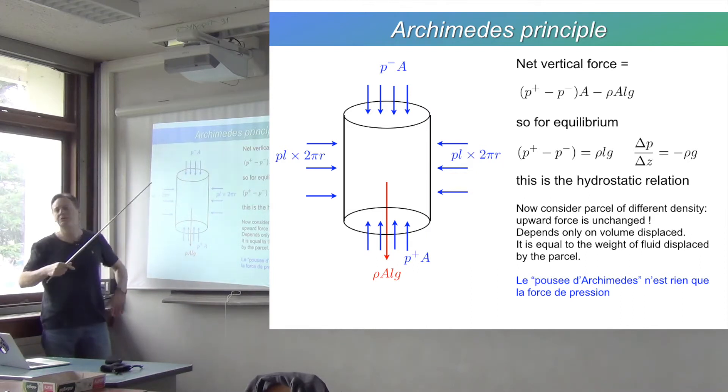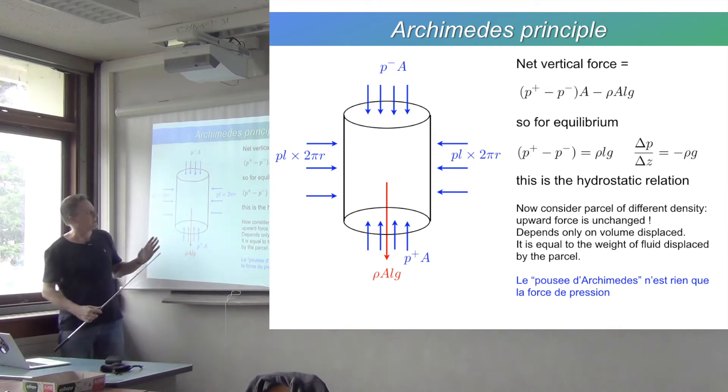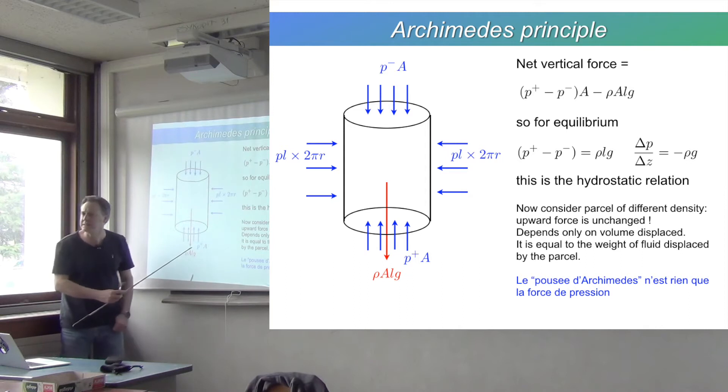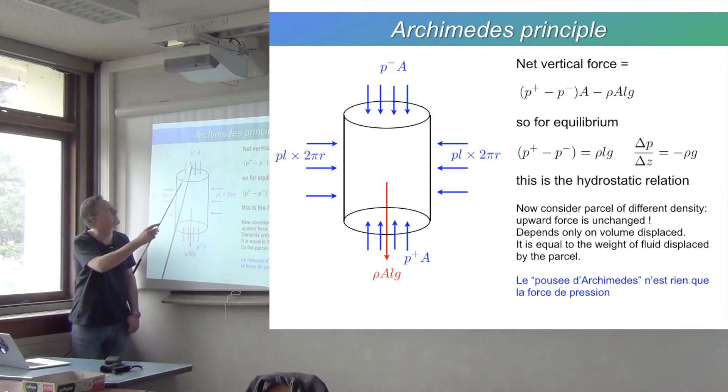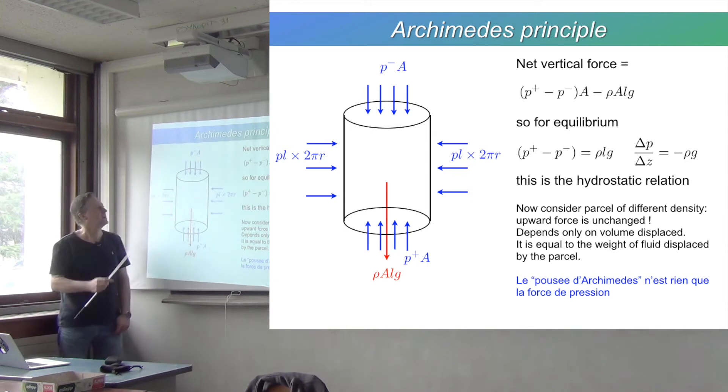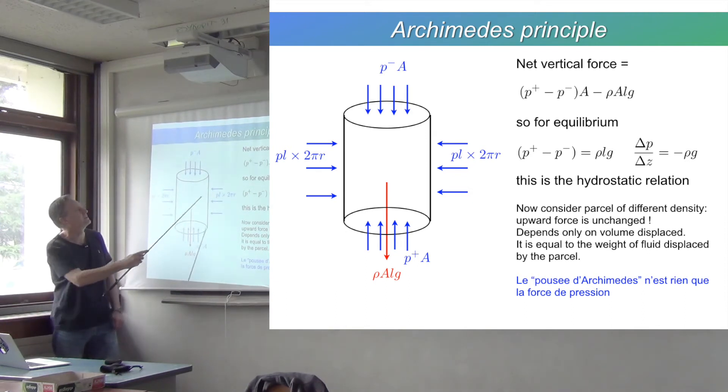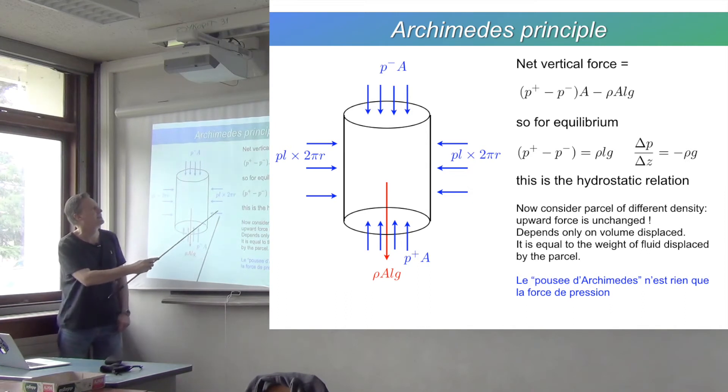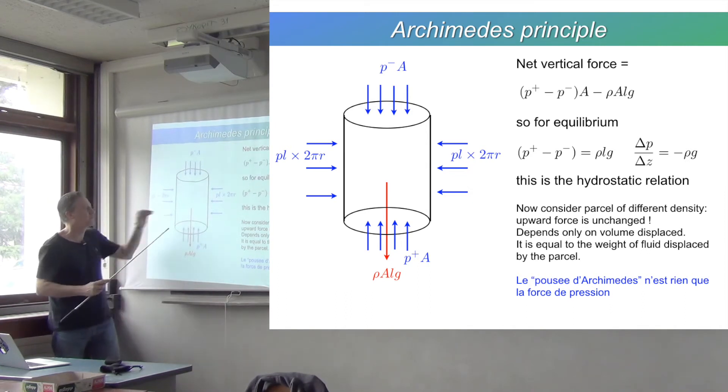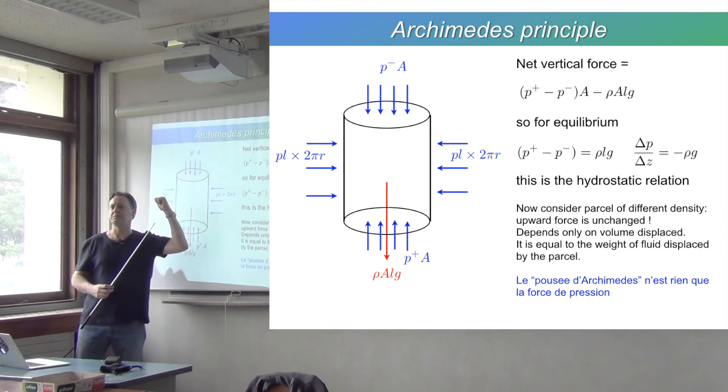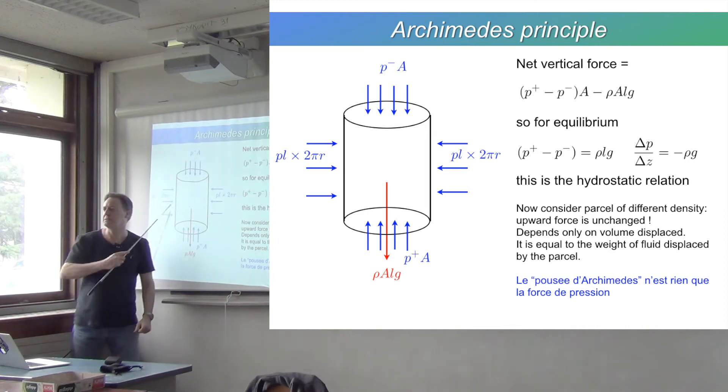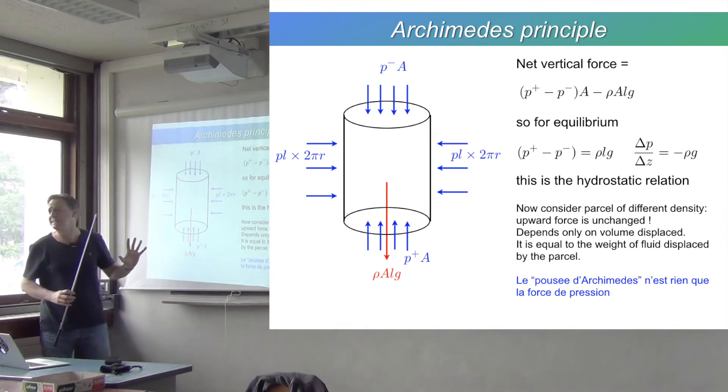That is pushing downwards because pressure always pushes in on things. At the bottom it's pushing upwards. There's a slight imbalance between the top and the bottom because the pressure is greater at the bottom. On the sides the pressure cancels out because what's pushing that way is the same thing pushing this way at every level.